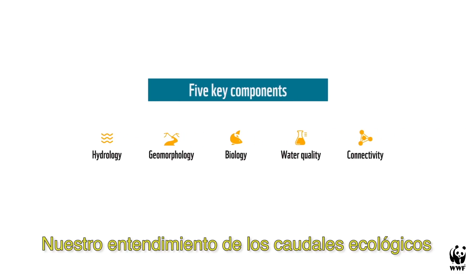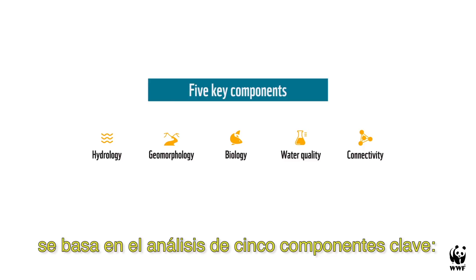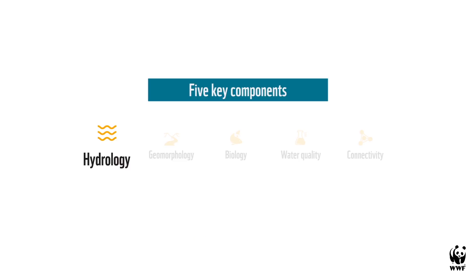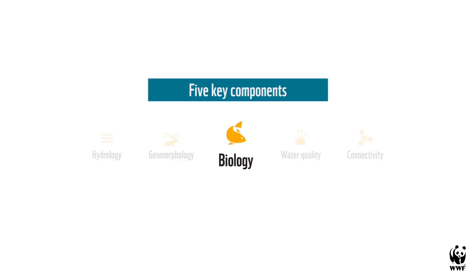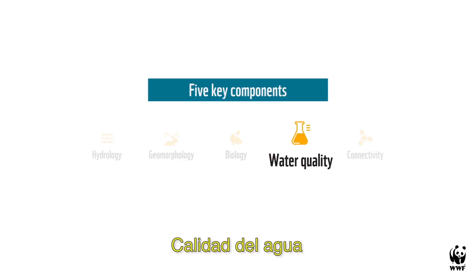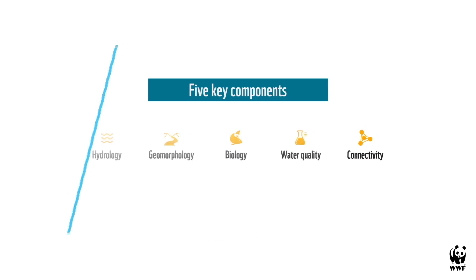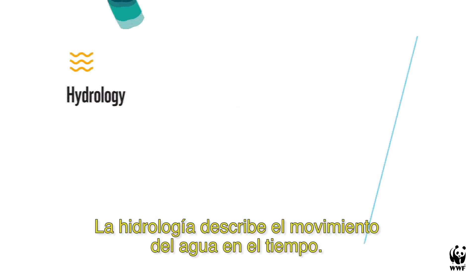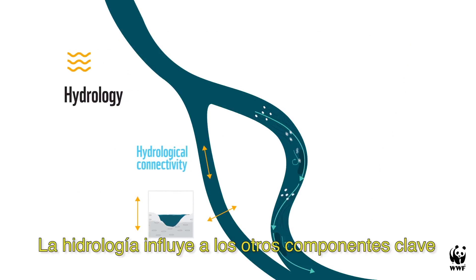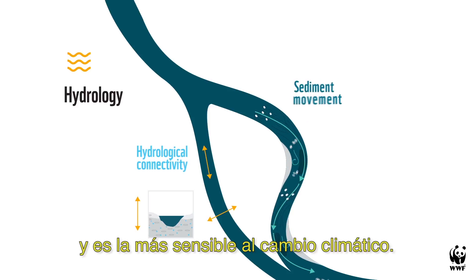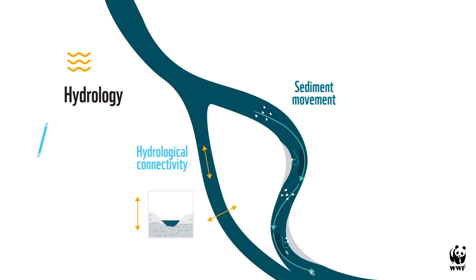Our understanding of environmental flows is based on the analysis of five key components: hydrology, geomorphology, biology, water quality and connectivity. Hydrology describes the movement of water over time. Hydrology affects all of the other key components and is the most sensitive to climate change.